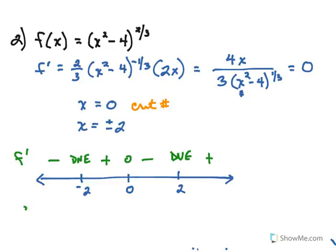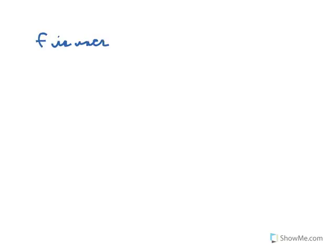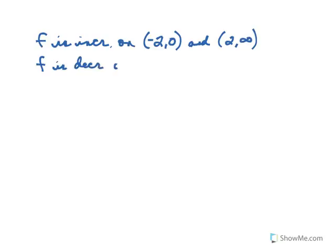So think about what this tells us about the original function. The original function starts out decreasing, then switches to increasing, then decreasing, then back to increasing again. So f is increasing on the intervals from negative 2 to 0 and from 2 to infinity. And f is decreasing on the intervals from negative infinity to negative 2 and from 0 to 2.